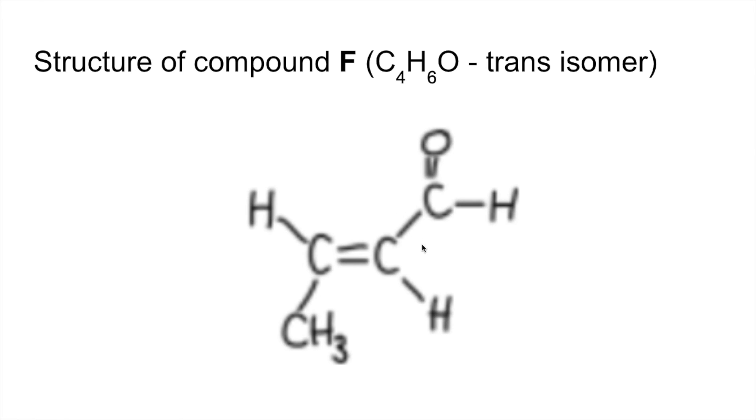Fragmentation: so when that breaks off there, that's the loss of 29. The peak at 41 would be due to this fragment here with a positive charge. And you can see clearly the trans configuration. So we've got the hydrogens, the identical atoms diagonally opposite each other on the carbon-carbon double bond.